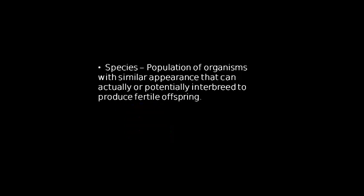The next term we need to define is species. Species, from the previous topic, is the lowest level on the Linnaean system of classification. In this context, a species is a population of organisms with similar appearance that can actually or potentially interbreed to produce fertile offspring. What's important here is that they can interbreed to produce fertile offspring.